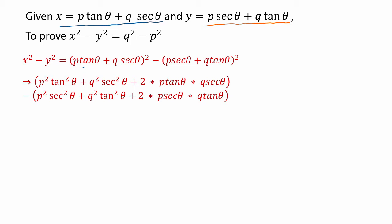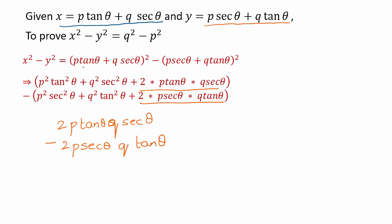The important thing is that the middle terms — 2p·tanθ·q·secθ from x² and minus 2p·secθ·q·tanθ from y² — are the same, so these two terms cancel each other out.